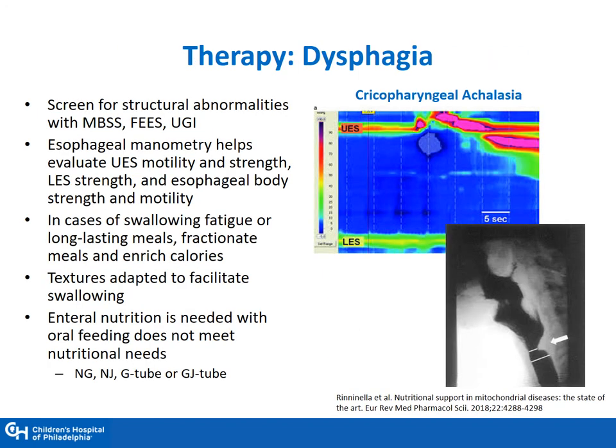When patients come to us with dysphagia, we must screen them with modified barium studies, FEES, and upper GIs. We look at esophageal manometry to assess cricopharyngeal achalasia, as well as the lower esophageal sphincter. These images show cricopharyngeal achalasia on both esophageal manometry and radiographic imaging. Textures must be adapted to facilitate swallowing, and enteral nutrition is sometimes needed, either through a nasogastric, nasojejunal, or G or GJ tube.